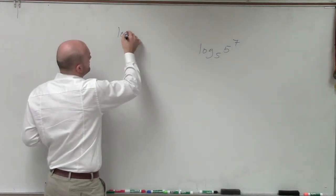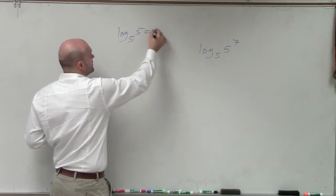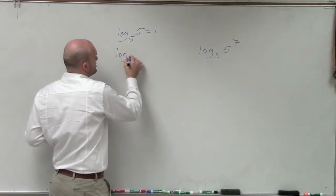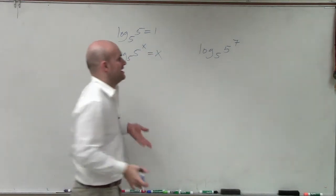First of all, if we just go through our rules of logarithms, we have log base 5 of 5, that's going to equal 1. And then we said log base 5 of 5 raised to the x equals x. Now, why is that exactly the case?